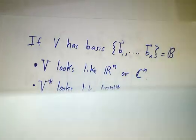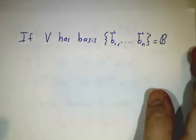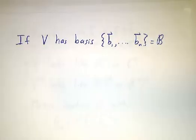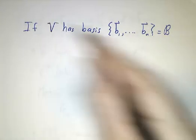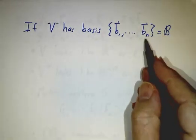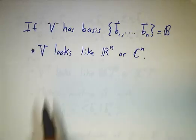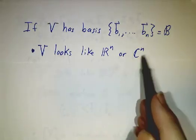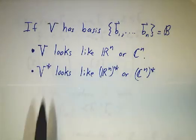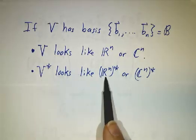The next thing we want to do is use a basis. The point of having a basis is to get coordinates. If V has a basis consisting of n vectors, in other words if V is n dimensional, then the basis makes V look like R^n if it's real, or C^n if it's complex.